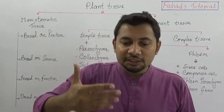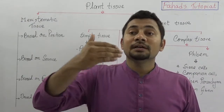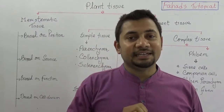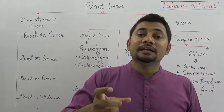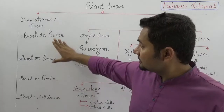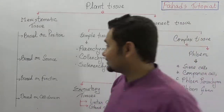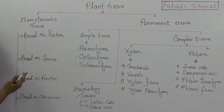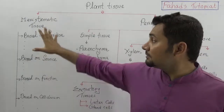The meristematic tissue cells have the ability of cell division and growth. Meristematic tissues have four different categories which are not actually explained at SSC level, but you will see them in a broader aspect at HSC level or A-level. Based on position, source, function, and cell division, there are three types each — so at most twelve types of meristematic tissues in total.